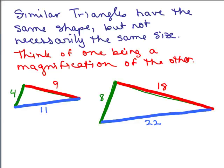Similar triangles have the same shape, but not necessarily the same size. You could think of one being a magnification of the other. So here's an example of two similar triangles. They look the same, it's just that one is actually larger. And in this particular set of similar triangles, the sides of one triangle are actually twice as long as the sides of the other triangle.